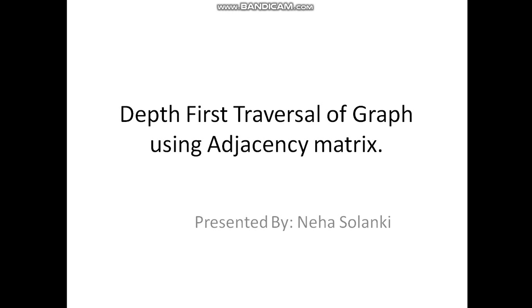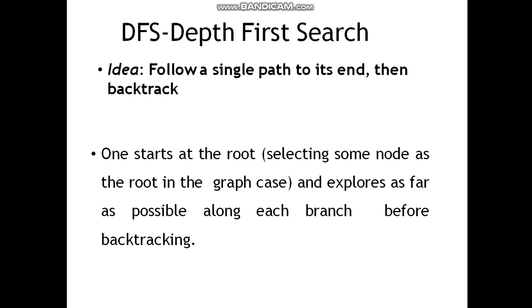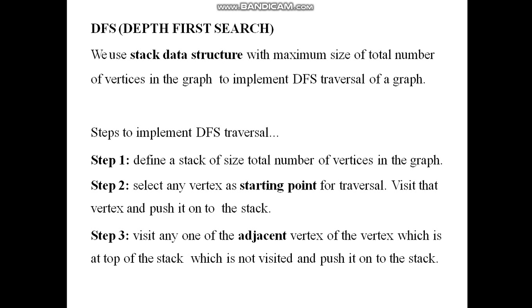Hello students. In today's data structure and algorithm lab, we are going to implement depth first traversal of a graph using adjacency matrix. Before doing the practical, let us understand depth first traversal. The idea behind depth first traversal is to follow a single path to its end, then backtrack. One starts at the root node and explores as far as possible along each branch before backtracking. The root node is the node selected for the traversal.